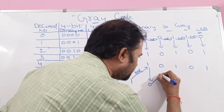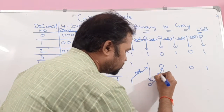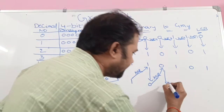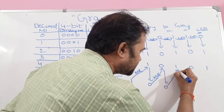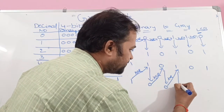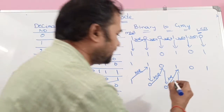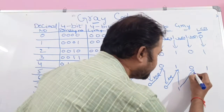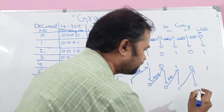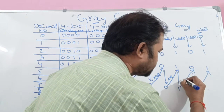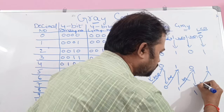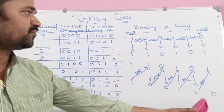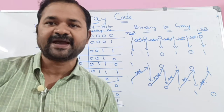Next we perform XOR operation on these 2 bits: 0 XOR 0 means 0, so we write 0 here. Next XOR on these 2 bits: 0 XOR 1 means 1. Next XOR operation on these 2 bits: 1 XOR 0 means 1. Next XOR on these 2 bits: 1 XOR 1 means 0. So the binary number is 1, 0, 0, 1, 1, 0.